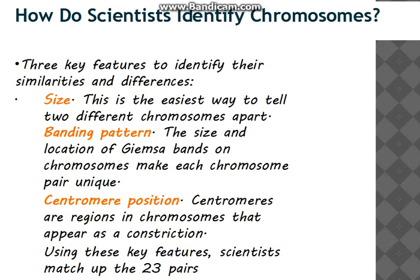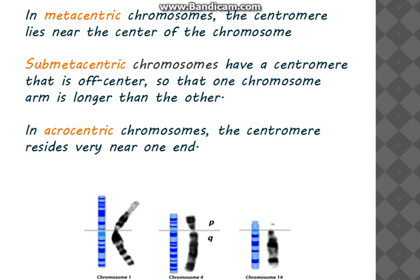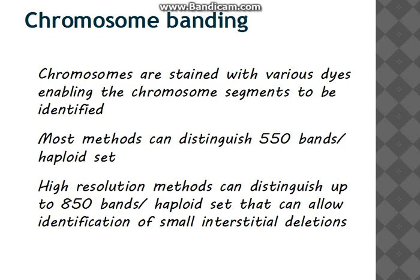How will scientists identify chromosomes? We have to know some similarities and differences. First is size — the easiest way to tell two chromosomes apart. Next is the banding pattern; bands make each chromosome unique. There is also the centromere, the constricted part of the chromosome. According to centromere position, chromosomes can be metacentric (centromere near the center), submetacentric (centromere off-center), or acrocentric (centromere near one end).